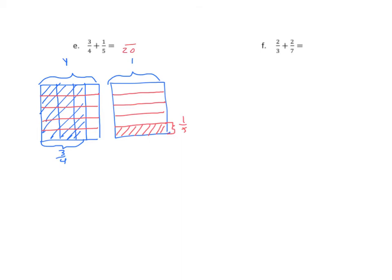How many are shaded out of the twenty? Counting them — fifteen out of twenty are shaded.